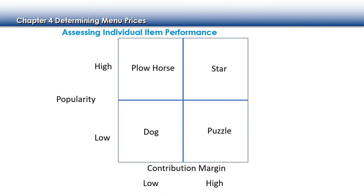Flip over to the second page — you have a blank square. We're going to fill it out step by step. The first thing I want you to write on this square is the word 'high' and 'low': high at the top, low at the bottom along the side, then low on the left and high on the right along the bottom. Then write the word 'popularity' on the side and 'contribution margin' along the bottom.